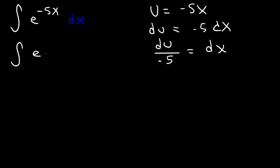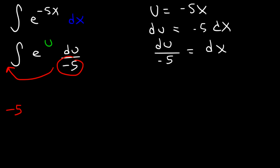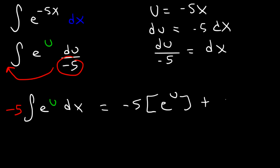Let's replace negative 5x with the u variable, and replace dx with du over negative 5. Take the constant negative 5 and move it to the front, giving negative 5 times the antiderivative of e to the u du. We know the integral of e to the u is simply e to the u, so the antiderivative is e to the u plus c. Now replace u with negative 5x.